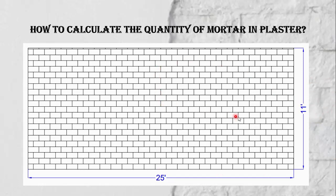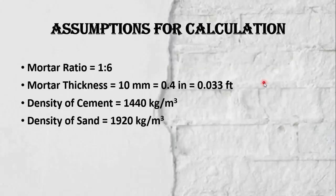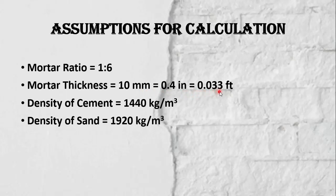We will calculate the quantity of cement, sand, and water for plaster. These are the assumptions for our calculation: mortar ratio 1:6, meaning one part of cement and six parts of sand; mortar thickness 10 millimeters, which equals 0.03 feet; density of cement 1440 kg/m³; and density of sand 1920 kg/m³.